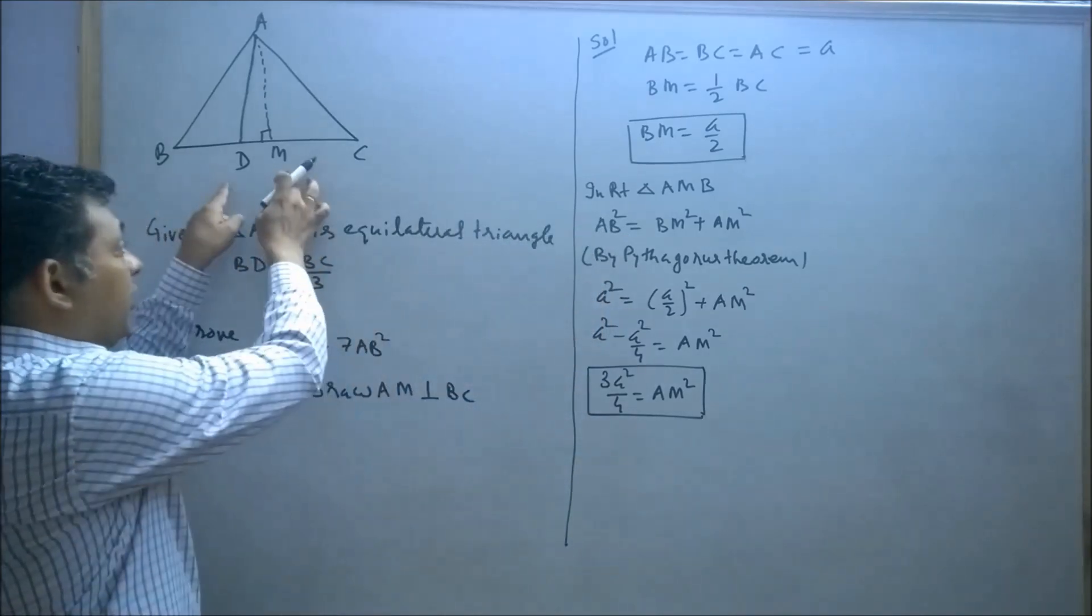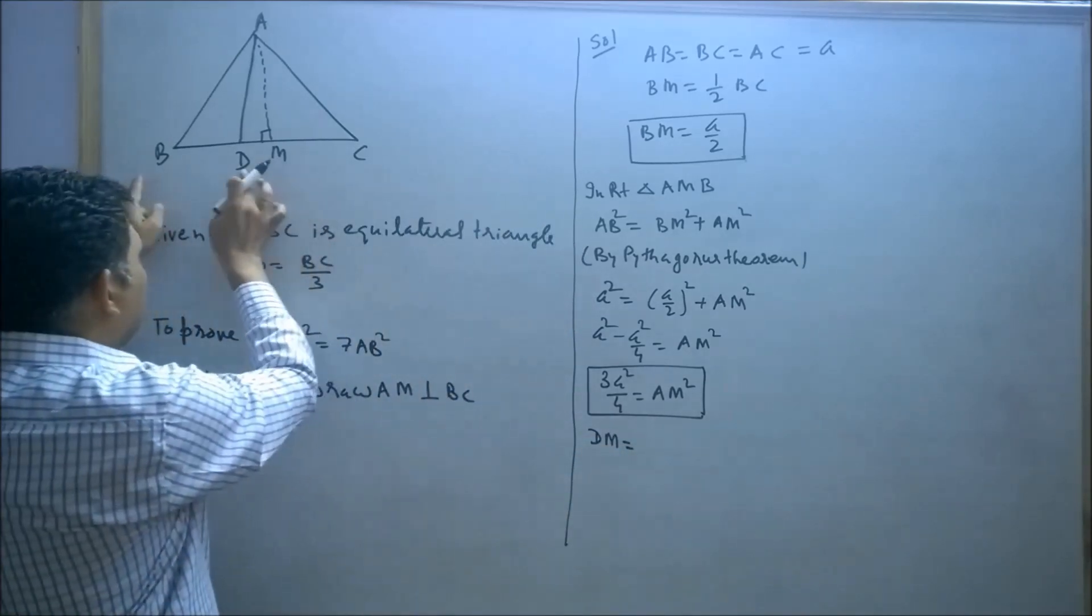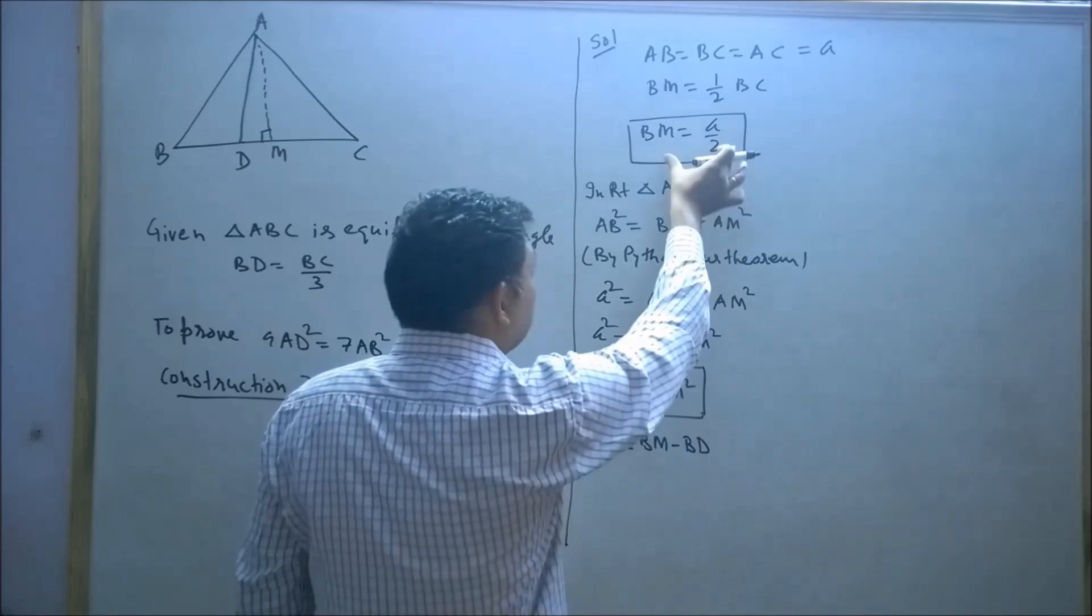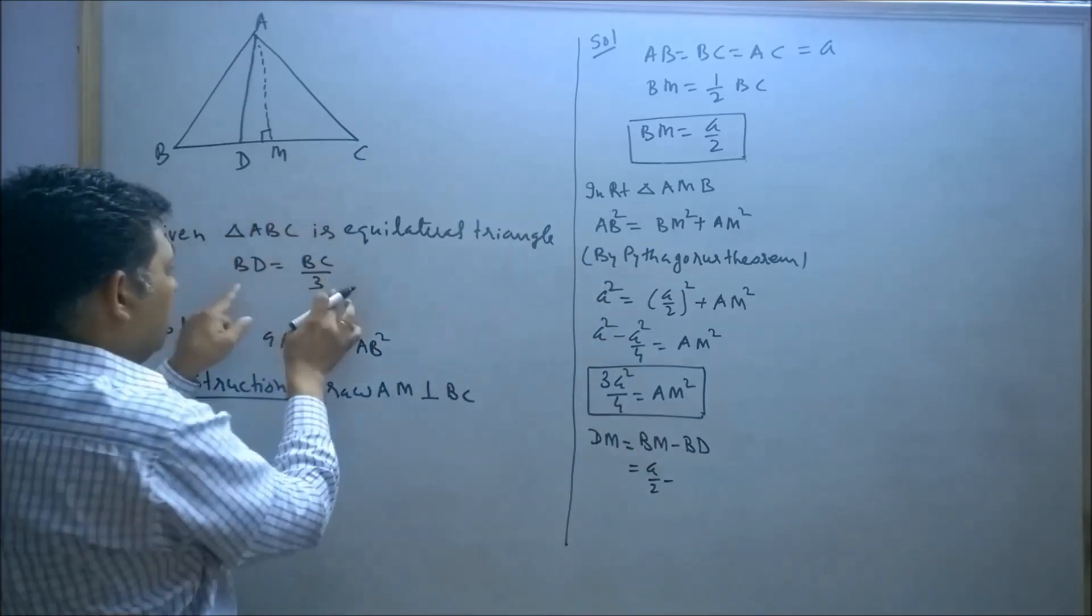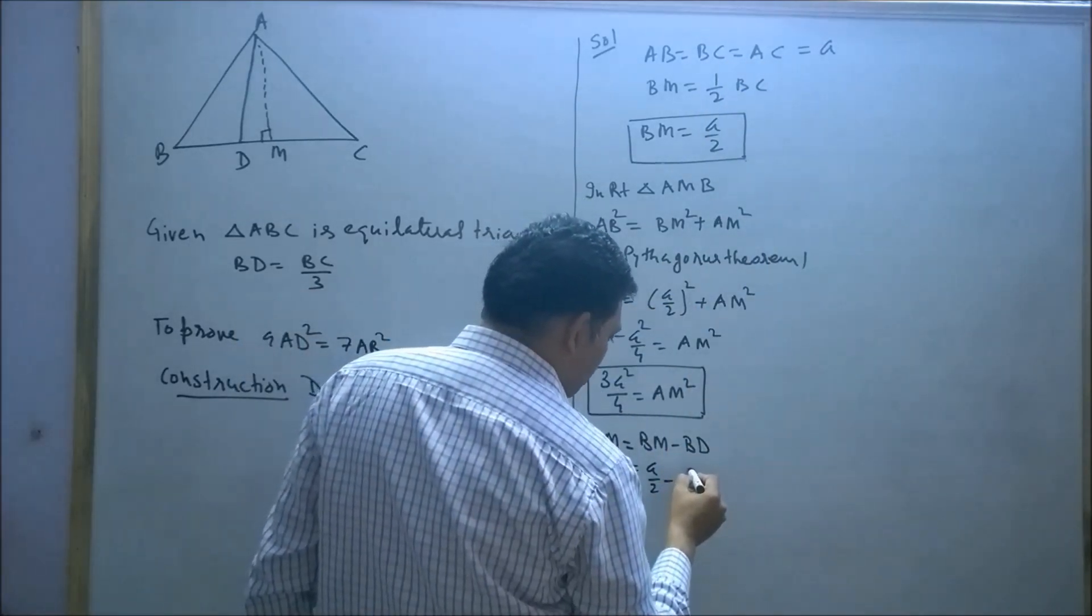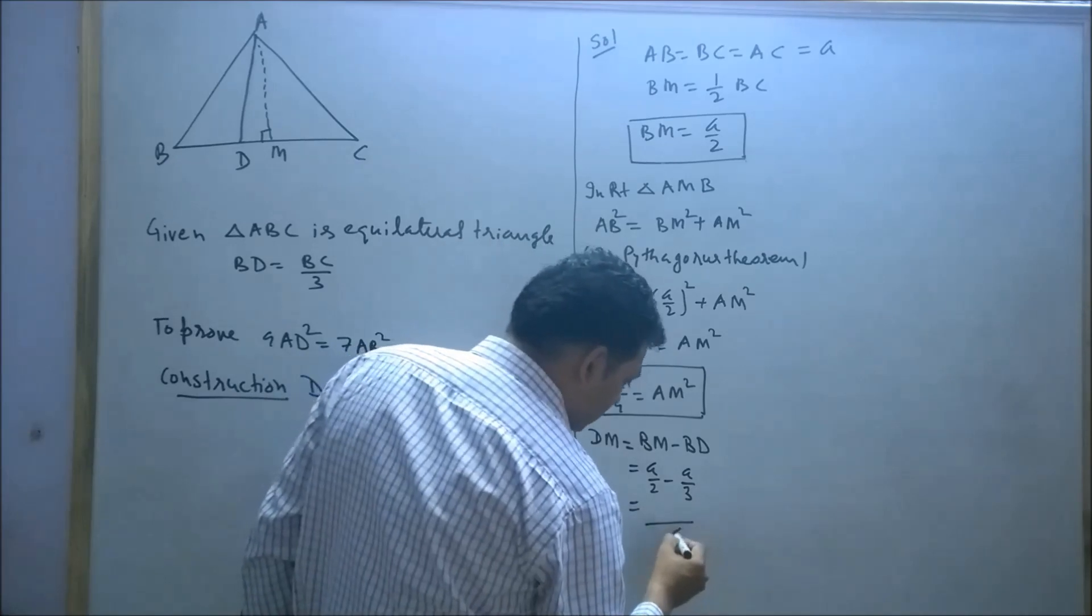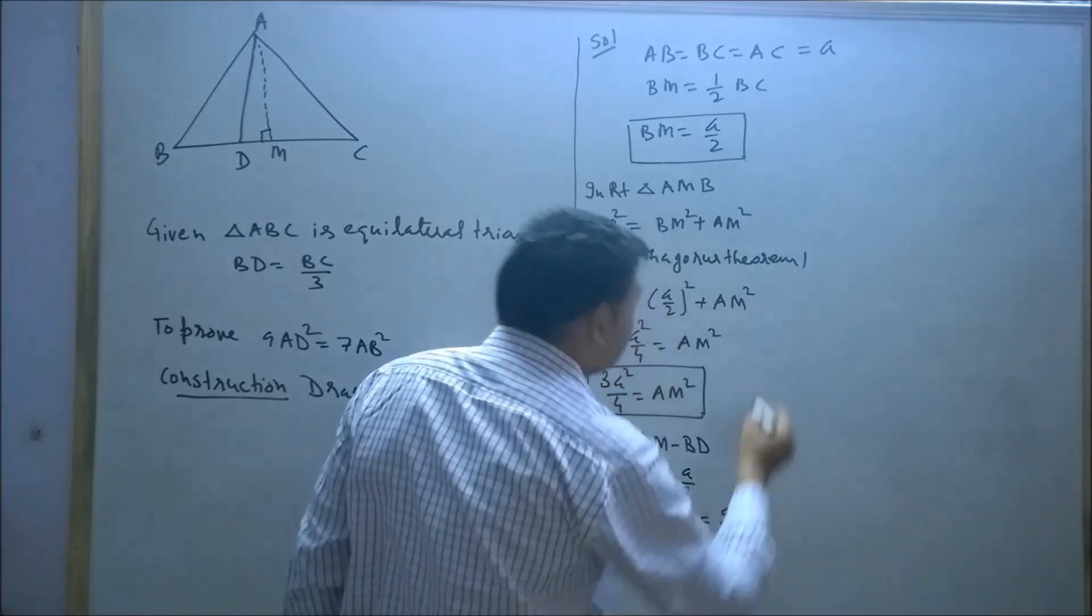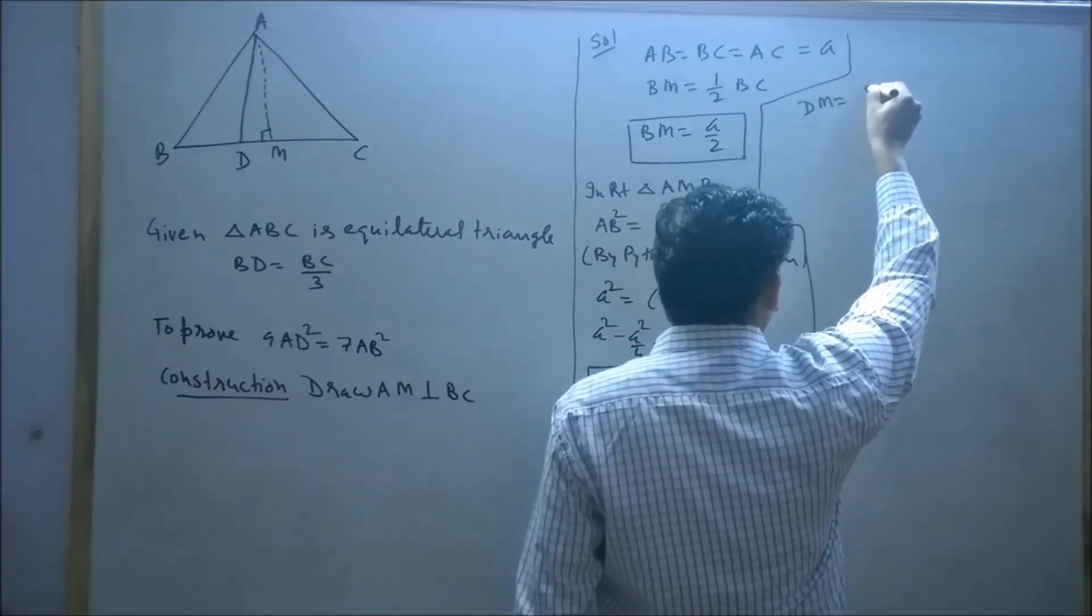Now find DM in terms of a. DM can be written as BM minus BD. BM is a/2. BD is given as BC by 3, and BC equals a, so BD equals a/3. Taking LCM of 2 and 3, which is 6: 3a minus 2a equals a. So DM equals a by 6.